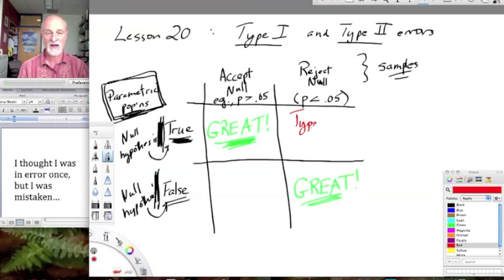In fact, this is a type 1 error. This is an interesting one. We found p less than 0.05, but in fact, the null hypothesis is true. There is no difference, or there's no effect of x on our y.